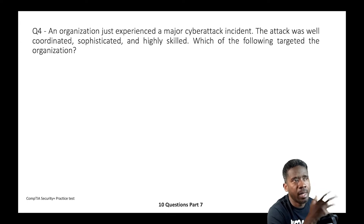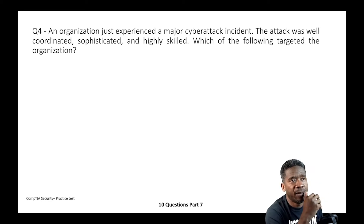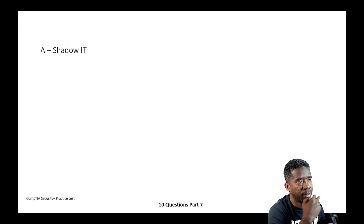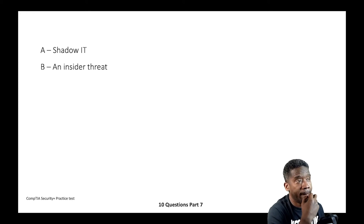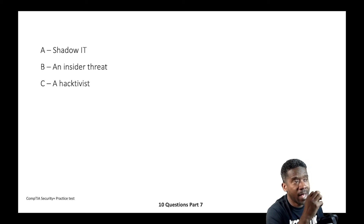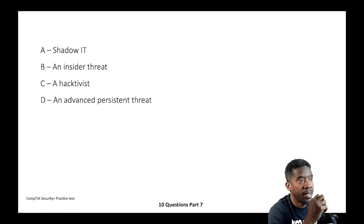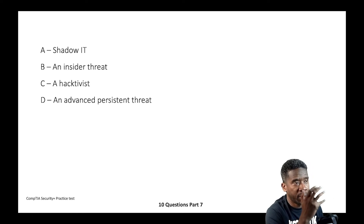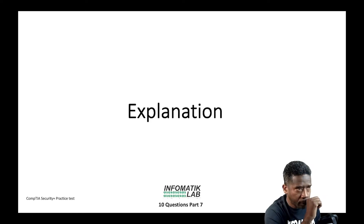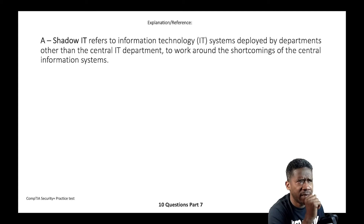Question four: An organization just experienced a major cyber attack that was well coordinated, sophisticated, and highly scaled. Which of the following targeted the organization? A) Shadow IT, B) Insider threat, C) Hacktivist, or D) Advanced persistent threat (APT).